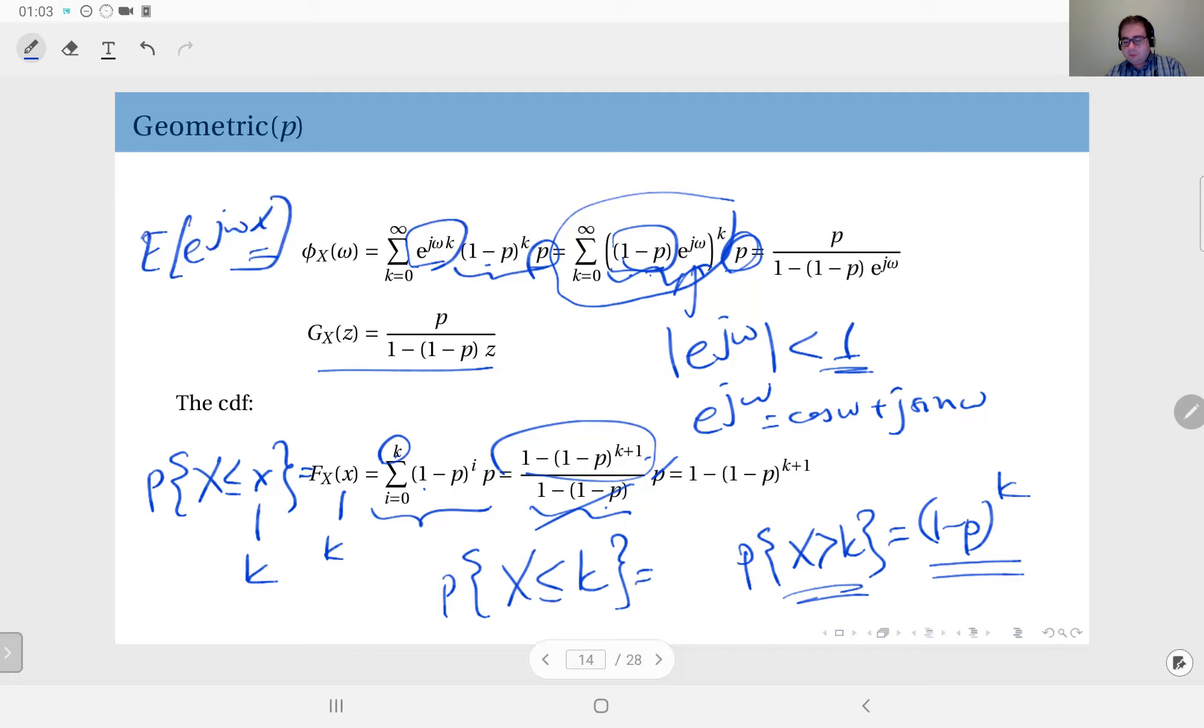So to obtain this, since this is the complement event of this, the probability for this would be 1 minus 1 minus p to power k plus 1. Sorry, this should be k plus 1, because the k plus first trial will also be a fail. Otherwise the k itself will be the outcome, okay. So you can also compute this through the summation, or you can compute this through this observation.